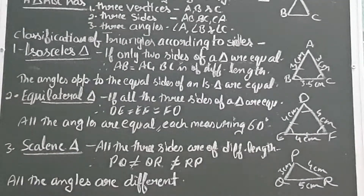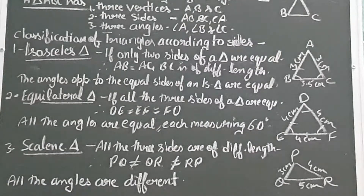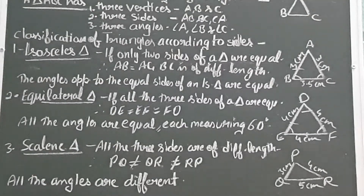The last type is the scalene triangle, where all three sides are of different lengths. In triangle PQR, PQ is not equal to QR, which is not equal to RP, with measurements of three centimeters, four centimeters and five centimeters respectively. All three angles are also different. To summarize: in an isosceles triangle two angles are equal; in an equilateral triangle all three angles are equal at 60 degrees each; in a scalene triangle all three angles are of different measurements.